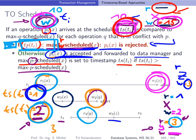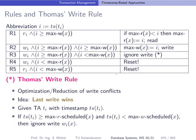This is how timestamp ordering works. To summarize more formally, we have five rules. We abbreviate the timestamp of transaction I simply as i. Rule 1: if the operation is a read and i is greater than or equal to the max write timestamp of X, then there is no problem. We update max R of X to i if i is larger than the previously stored max R.